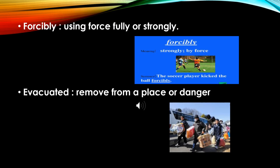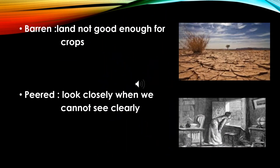Evacuated: remove from a place of danger. Barren: land not good enough for crops. Peered: look closely when we cannot see clearly.